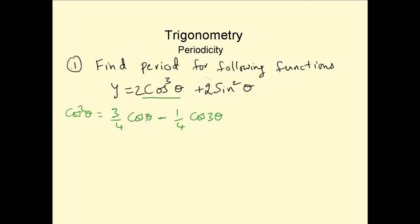This comes from the formula of cos 3a. If you remember, cos 3a would be 4 cos cube a minus 3 cos a. So you can find what is cos cube a.